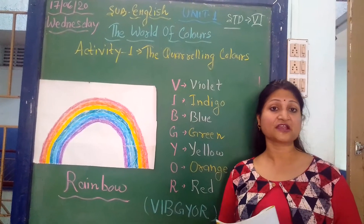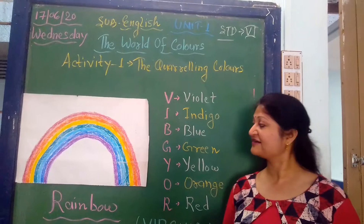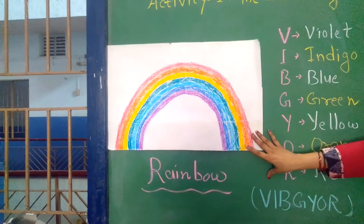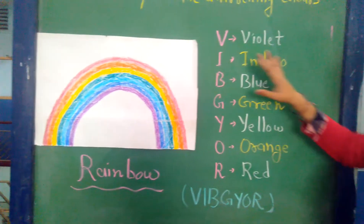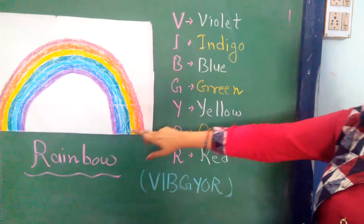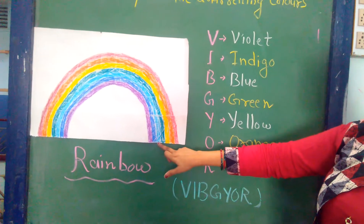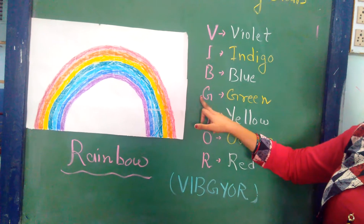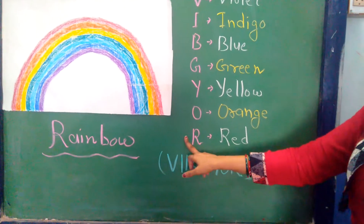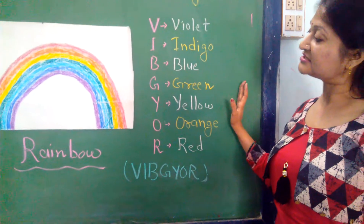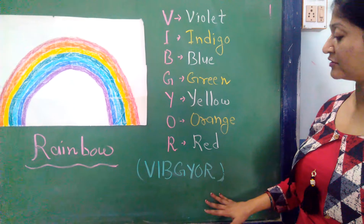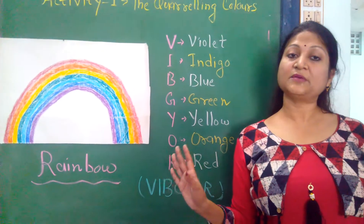The most beautiful thing we can see in rainy season — what is that? Yes, that is the rainbow. And we all love rainbow. Rainbow has seven colors: violet, indigo, blue, green, yellow, orange, and red. And you know, we can remember the rainbow color sequence in just one word — that is called VIBGYOR. With this we can easily remember the entire sequence.